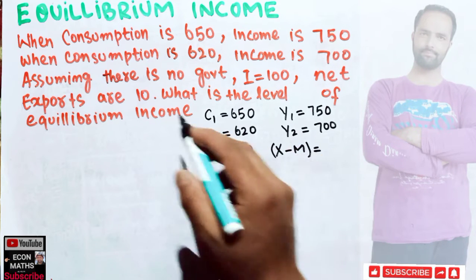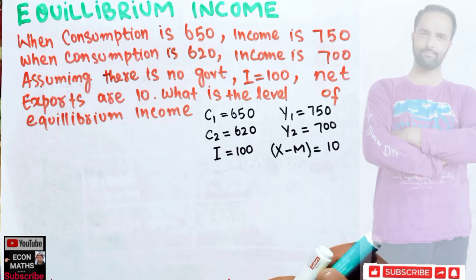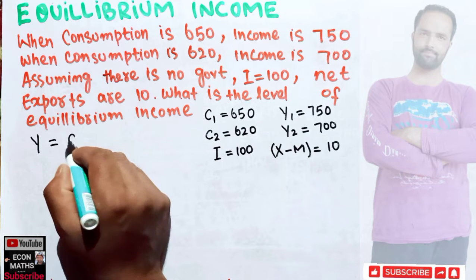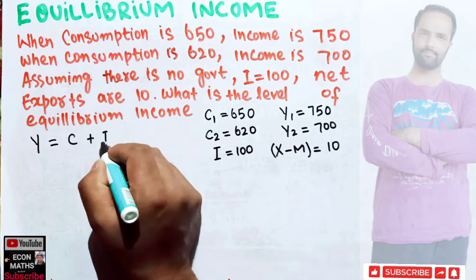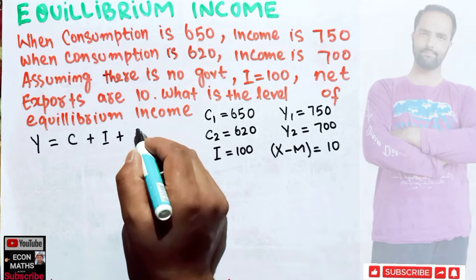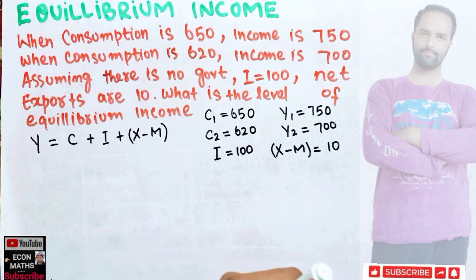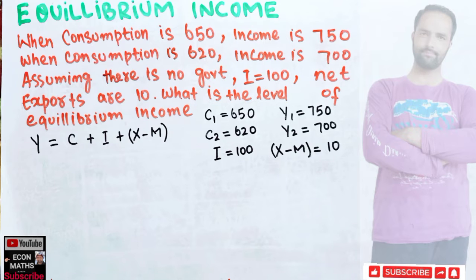We need to find the equilibrium level of income. We know our income identity: total income should be equal to consumption expenditure plus investment expenditure plus net exports (X minus M), because government expenditure is not given here.